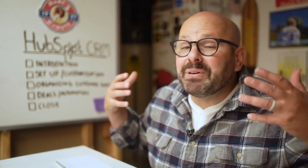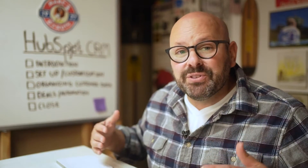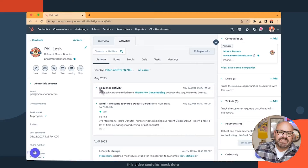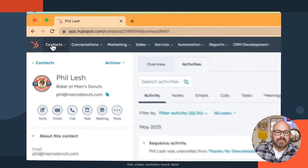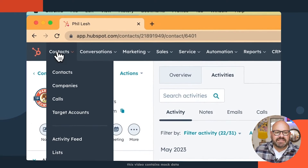Now let's take a look at how to set up a company in your CRM. Simply scroll to the top left, click Contacts, and scroll down to Companies.